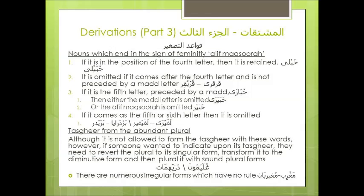Third, nouns which end in the sign of femininity — alif maqsura: one, if it is in the position of the fourth letter, then it is retained, as in Hubayli. Two, it is omitted if it comes after the fourth letter and is not preceded by a med letter, as in Qureyqir. Three, if it is the fifth letter preceded by a med, then either the med letter is omitted, as in Hubayra, or the alif maqsura is omitted, as in Hubayr. Four, if it comes as the fifth or sixth letter, then it is omitted, as in Lugayriiz or Wuraydir.